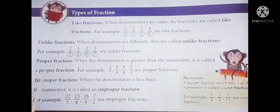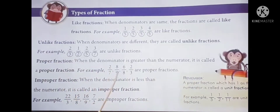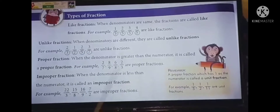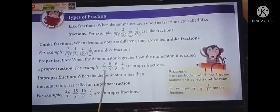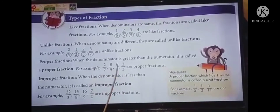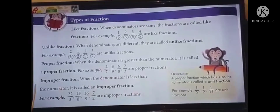Next is proper fraction. When the denominator is greater than the numerator, it is called a proper fraction. For example, two by seven, eight by nine, six by eight, two by three. In these fractions, the denominator is greater than the numerator. So these fractions are called proper fractions.